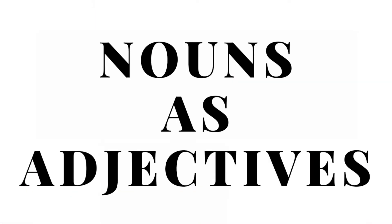Nouns as adjectives. Depending on usage, a noun may play the role of an adjective. The noun used as an adjective always comes before the noun. जब हम nouns को adjective के तोर पे use करते हैं, तब वो हमेशा singular में रहता है.